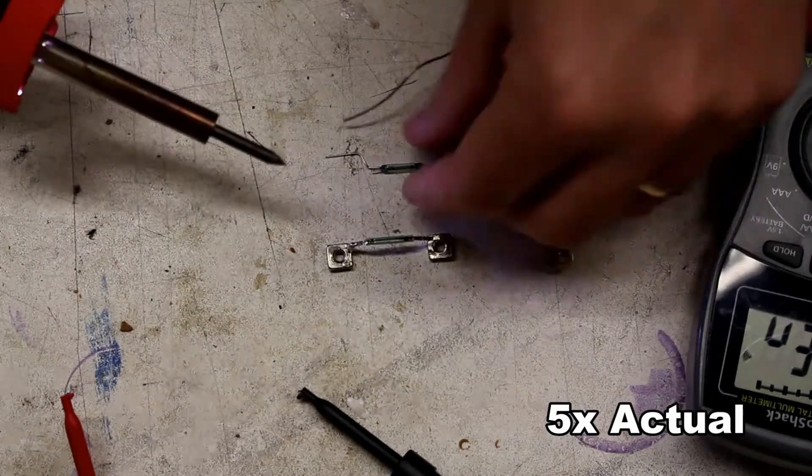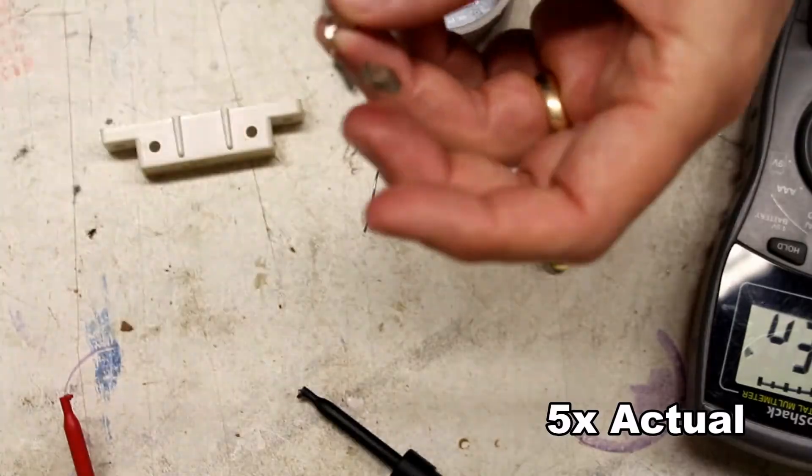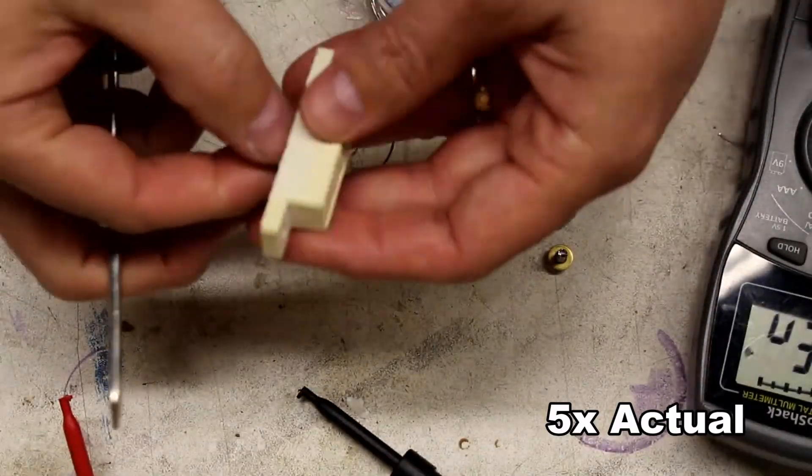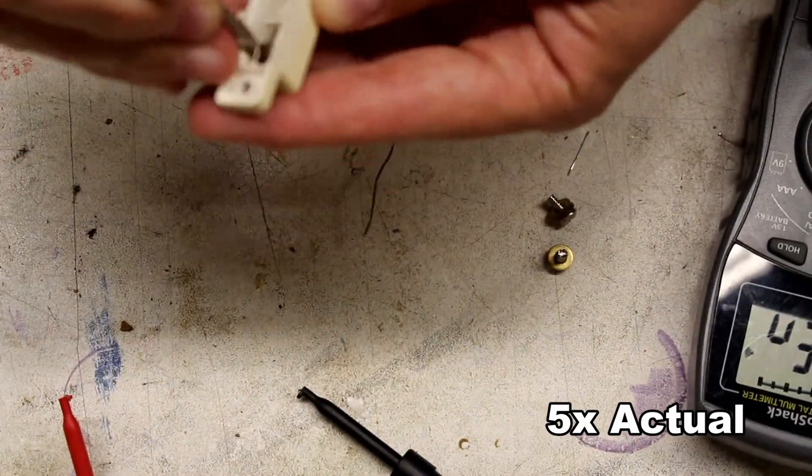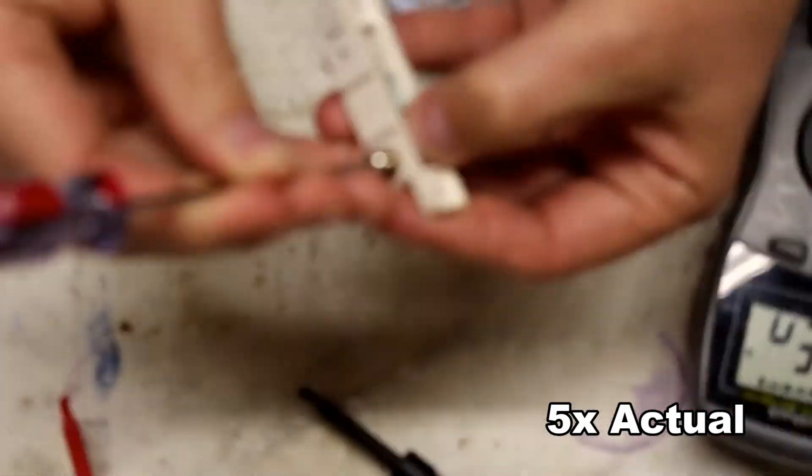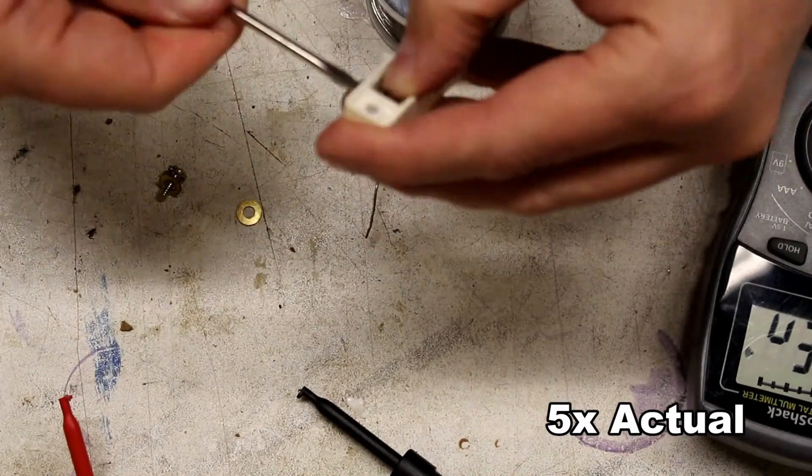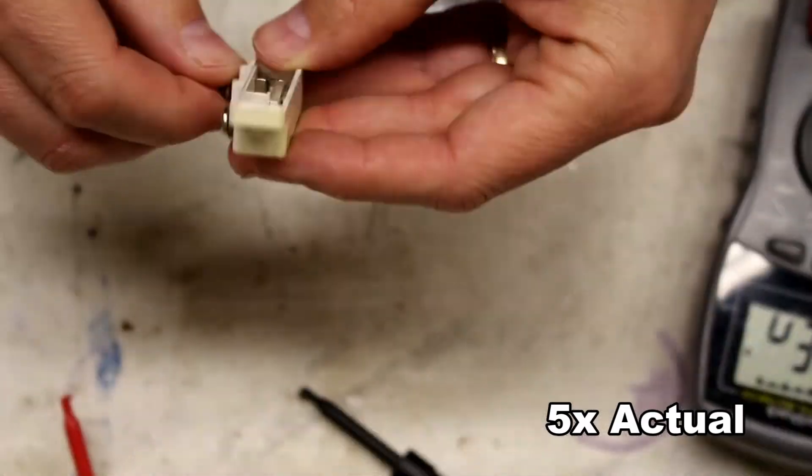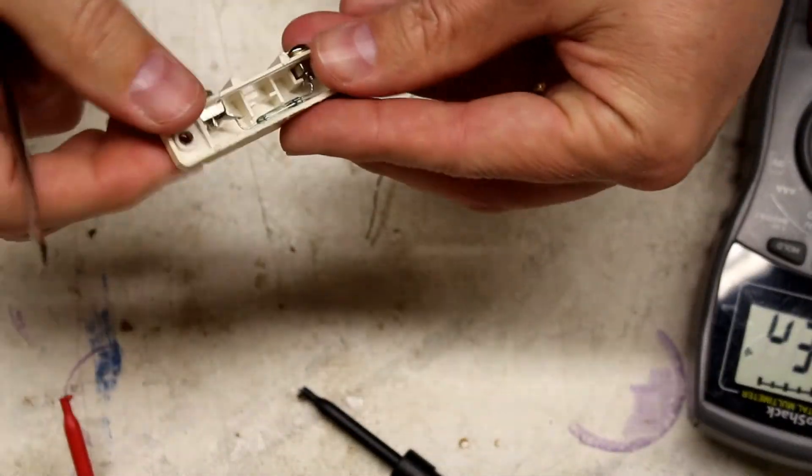So then once the solder gun was hot, I pre-tinned the wires and put it on there. And then basically insert it back into the casing, put the screws back in. And once the screws are back in, put the cover back on and some foam tape to hold it in place and I'm finished.